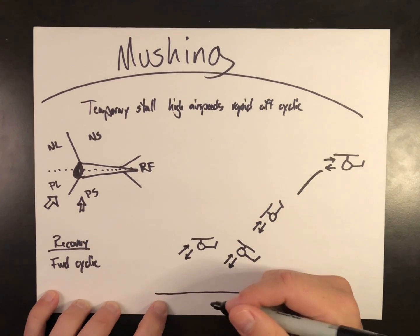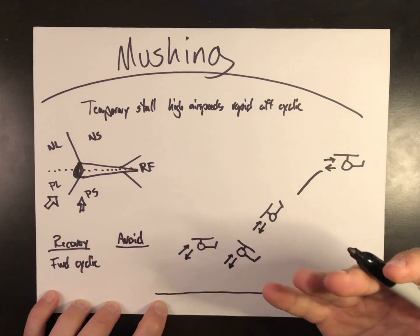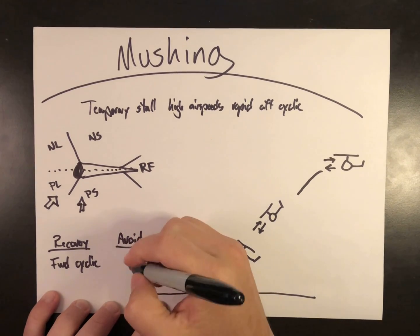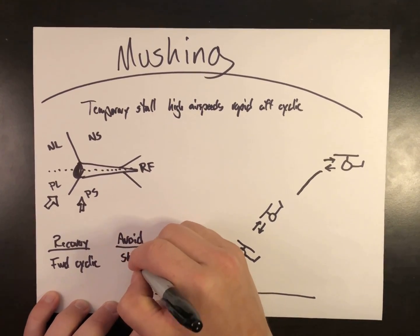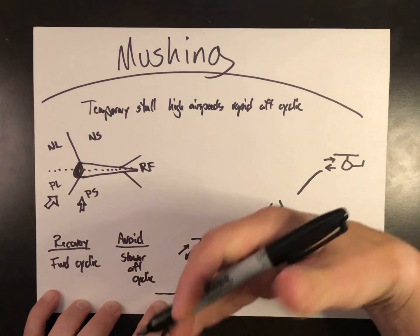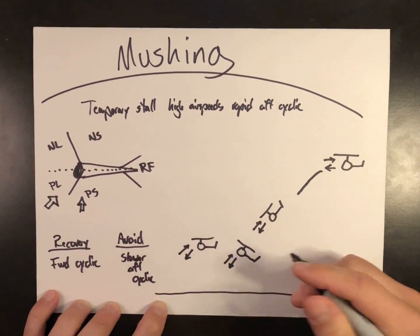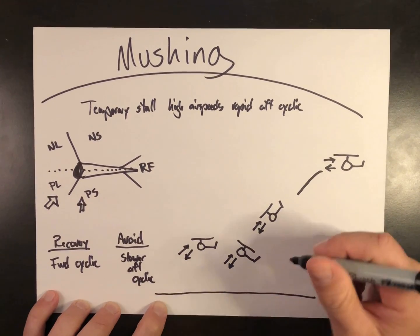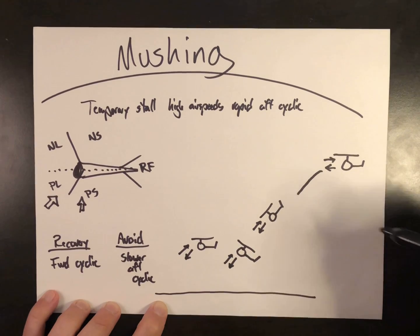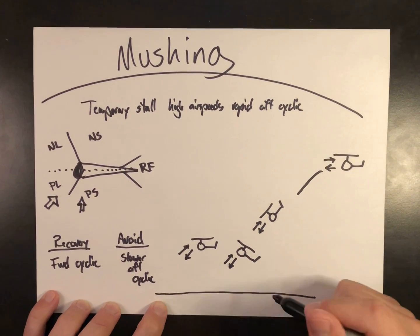The best fix is to never get into mushing in the first place. The only way to avoid it is to understand why it's caused: the aggressive nature of the dive recovery. To avoid it, use a slower, more progressive aft cyclic. Since the speed of the aft cyclic is what causes the mushing condition, avoid the rapid aggressive nature of it. With any flight maneuver, always allow enough altitude to recover. Keep in mind that at higher altitudes and airspeeds — say if you're in the mountains where the air is thinner — the time and altitude required to recover increases. Always think ahead; the worst time to realize you cannot recover from a maneuver is while you're actually in it.